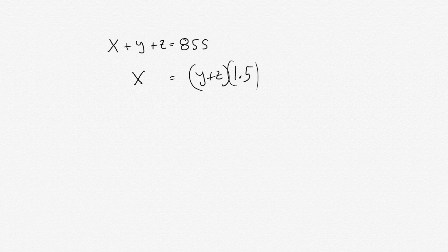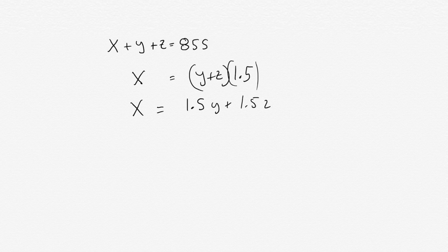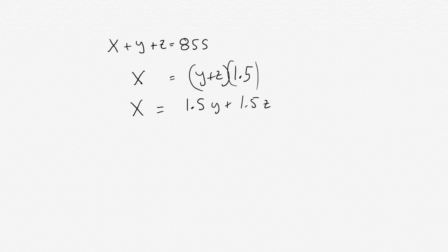And now we could distribute that one and a half. We get X equals 1.5Y plus 1.5Z. And what we want to do is we want to figure out what Y plus Z equals. So then that way we could take it out of the top equation up here, and then we could isolate what X equals.